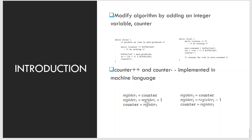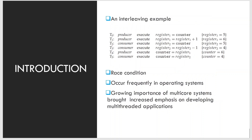For counter++, the value of counter is copied to register1, whose value is incremented, and the updated value is written back to counter. The same happens for counter--, except the value is decremented by 1. The concurrent execution of counter++ and counter-- is equivalent to a sequential execution in which the lower-level statements are interleaved in some arbitrary order.